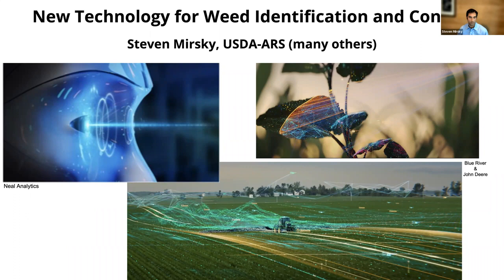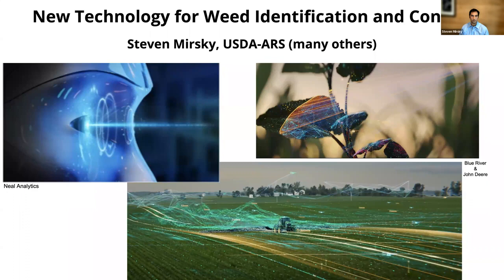I do want to mention that my abstract was a little lacking — it should have also included that this presentation features digital weeds work within ARS as a whole. There are a number of other ARS scientists whose work will be featured. I'll start with some of the work I'm involved in, providing specifics about computer vision and AI around species identification and mapping of weeds, and then close with examples of researchers in ARS doing this work in various applications.